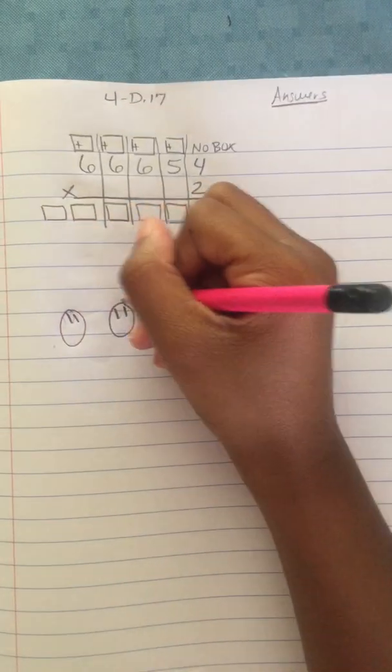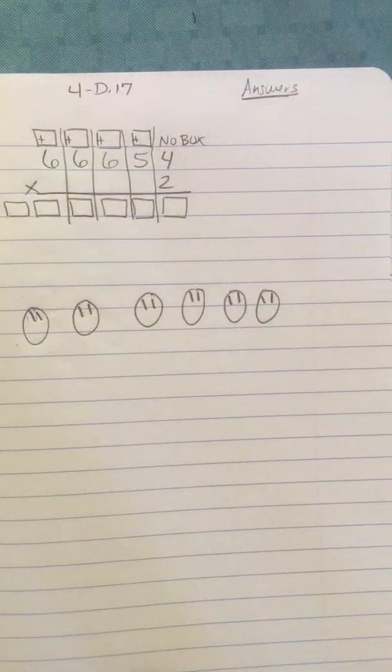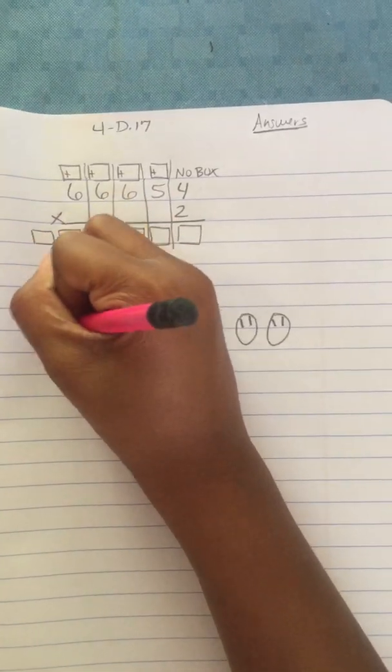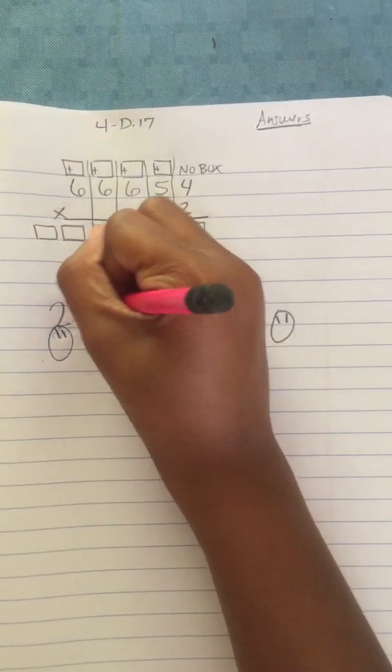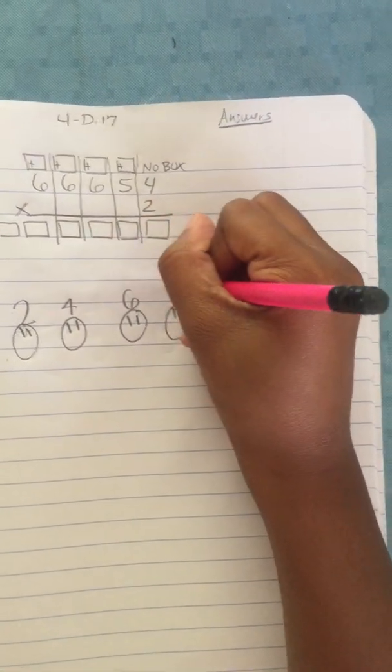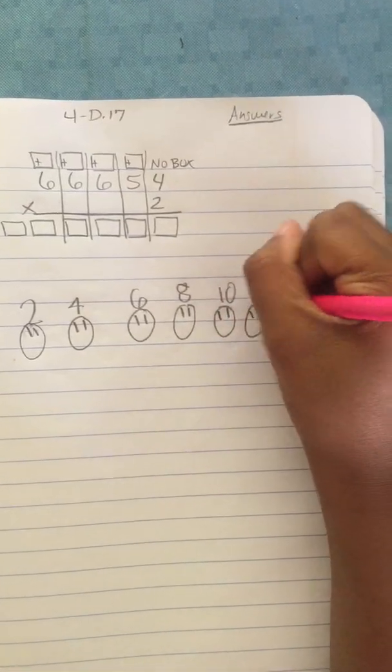And I'll put the numbers on top of them to remember my times tables. One, two, three, four, five, six, seven, eight, nine, ten, eleven, twelve.